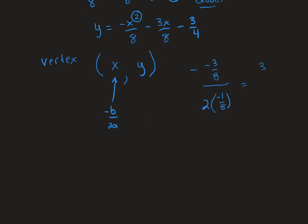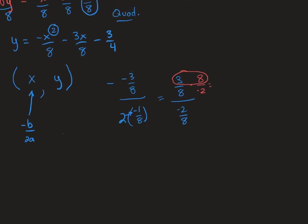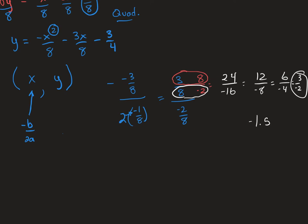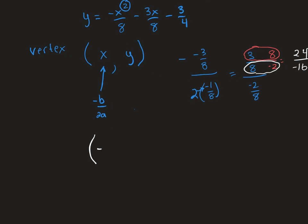That gives me 3/8 over 2 times negative 1, which is negative 2/8. When you have a compound fraction — a fraction divided by another fraction — you flip the bottom and multiply by the top. So that's times 8 over negative 2. So 3 times 8 is 24, and 8 times negative 2 is negative 16. Reducing: 24 over negative 16 gives 12 over negative 8, then 6 over negative 4, then 3 over negative 2, which is negative 1.5. So the x-value of my vertex is negative 1.5.